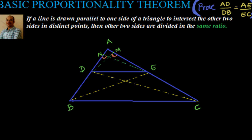The basic proportionality theorem states that if a line is drawn parallel to one side of a triangle to intersect the other two sides in distinct points, then the other two sides are divided in the same ratio. So we have to prove that AD by DB is equal to AE by EC in this particular diagram.